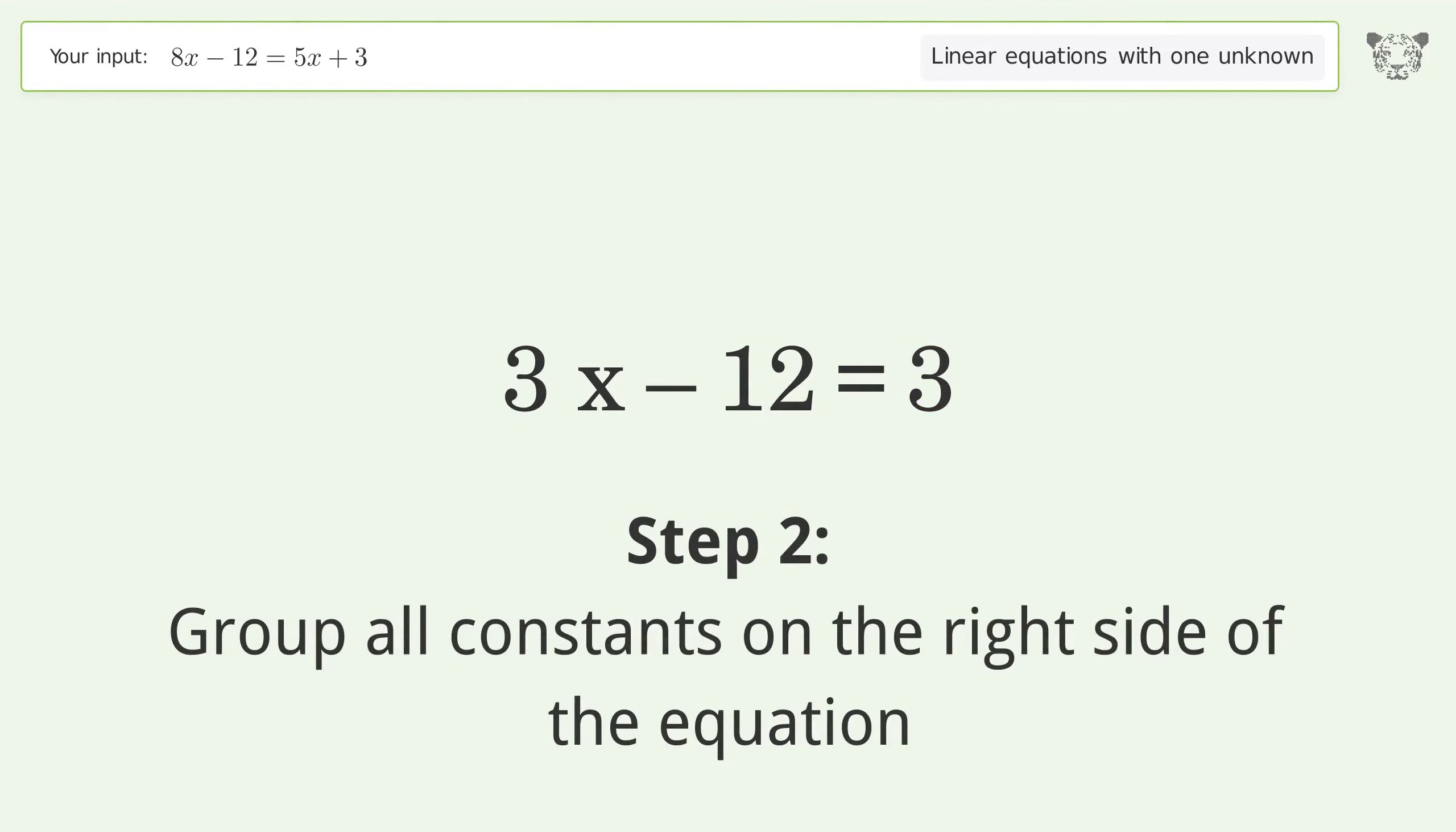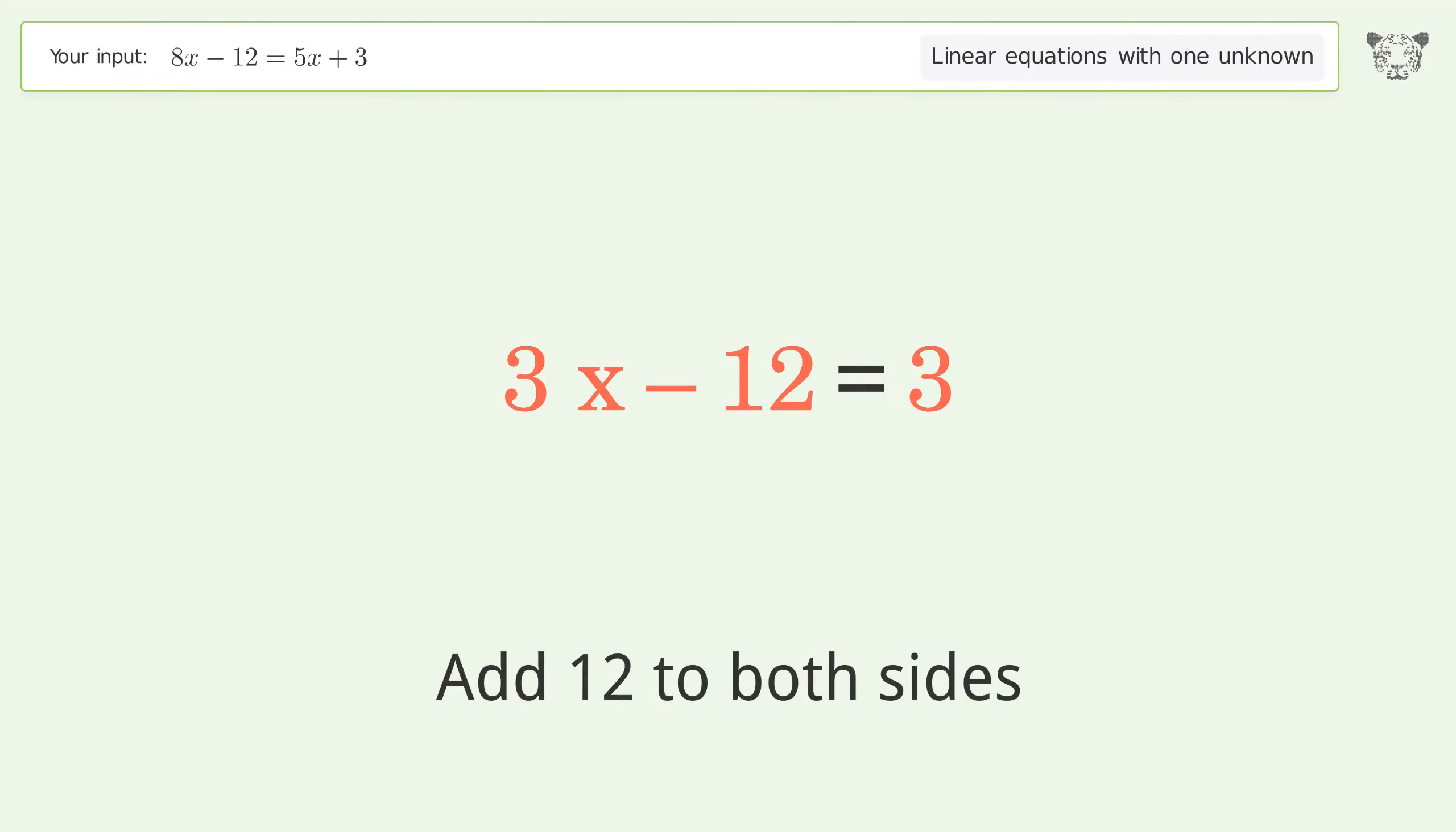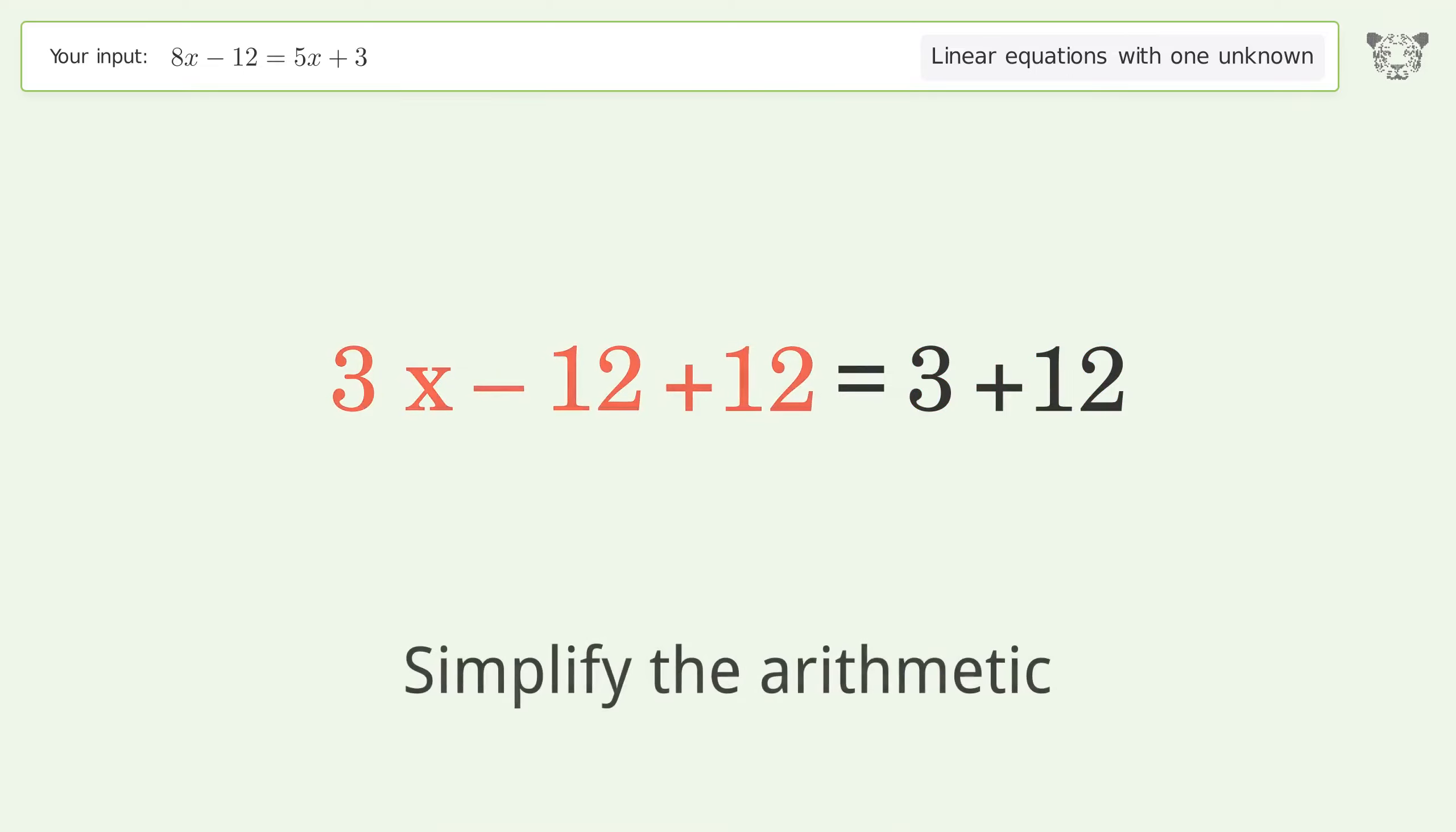Group all constants on the right side of the equation. Add 12 to both sides. Simplify the arithmetic.